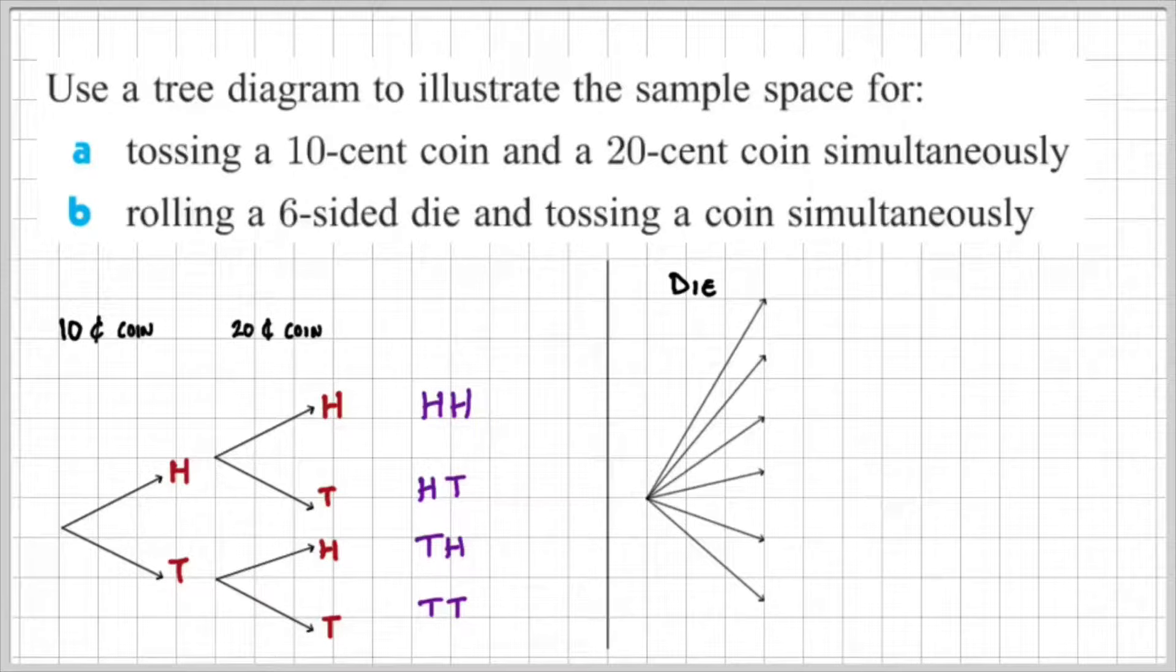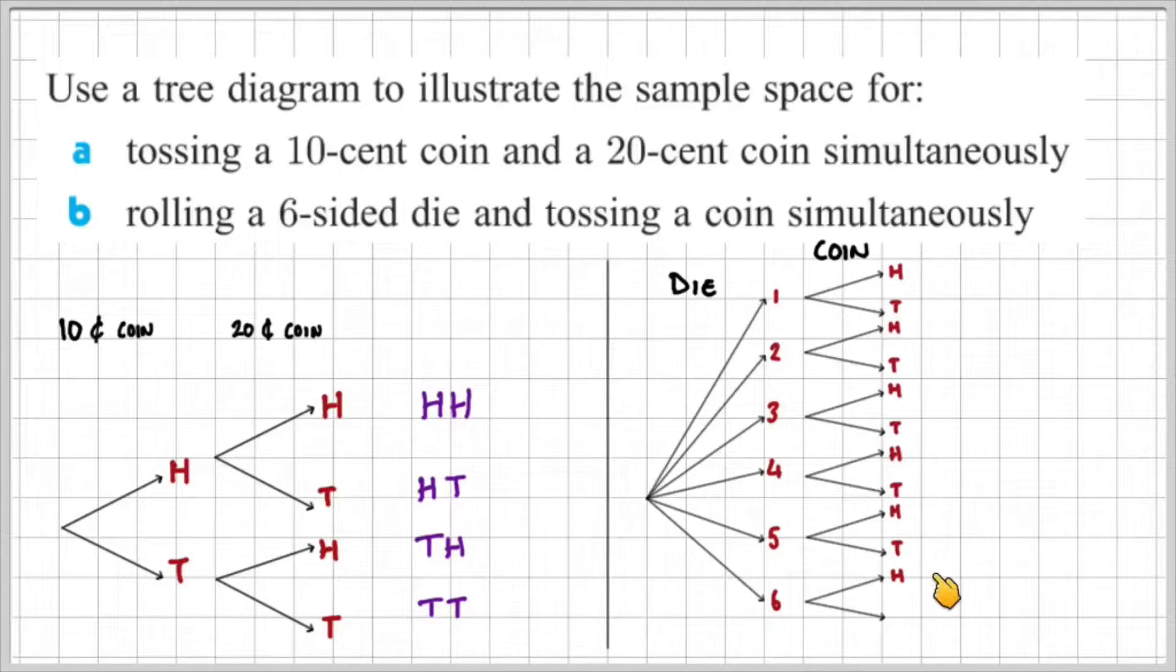For part B, since we have a six-sided die, we need six branches to represent the first possible outcomes and the second branch would represent the coin. Since the coin has two outcomes, each one of those is going to have two branches. If we fill in the possible outcomes of the die, we have one to six and for the coin we have heads or tails.